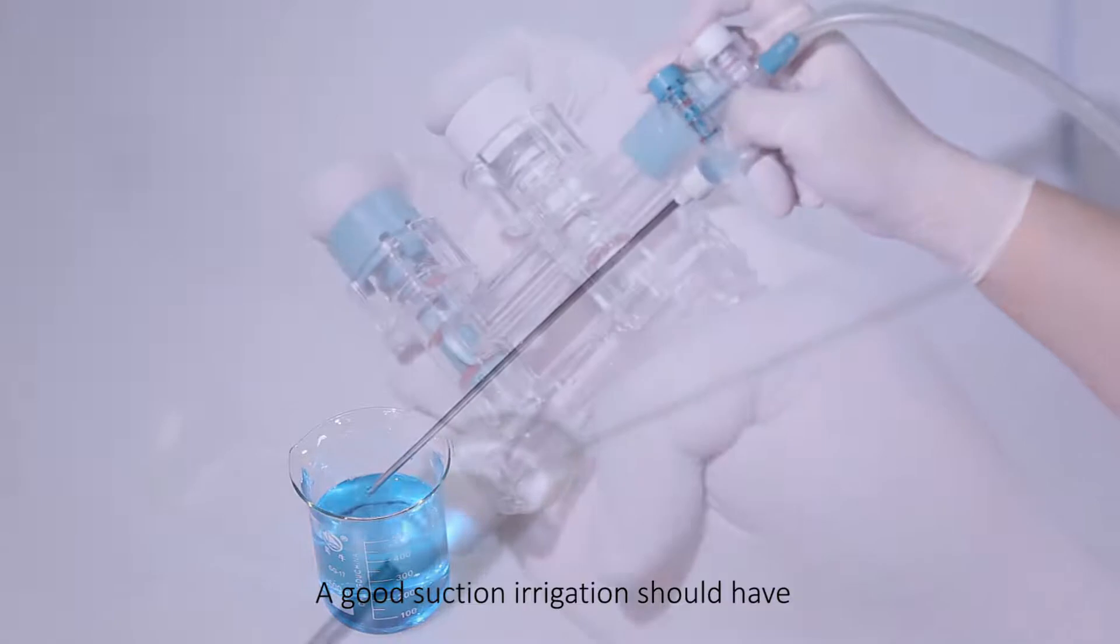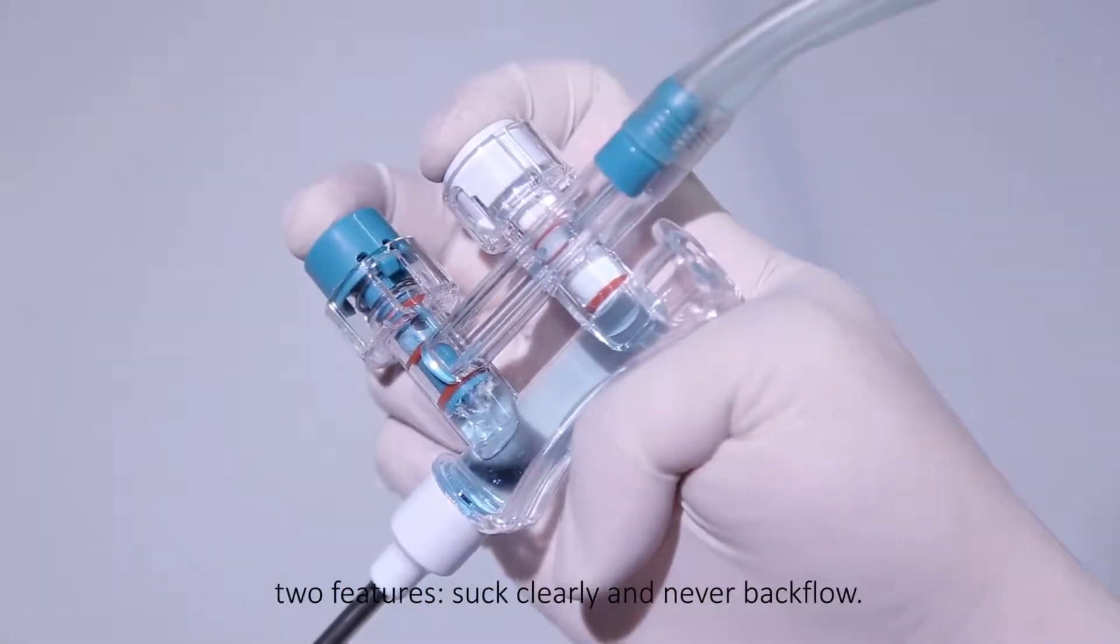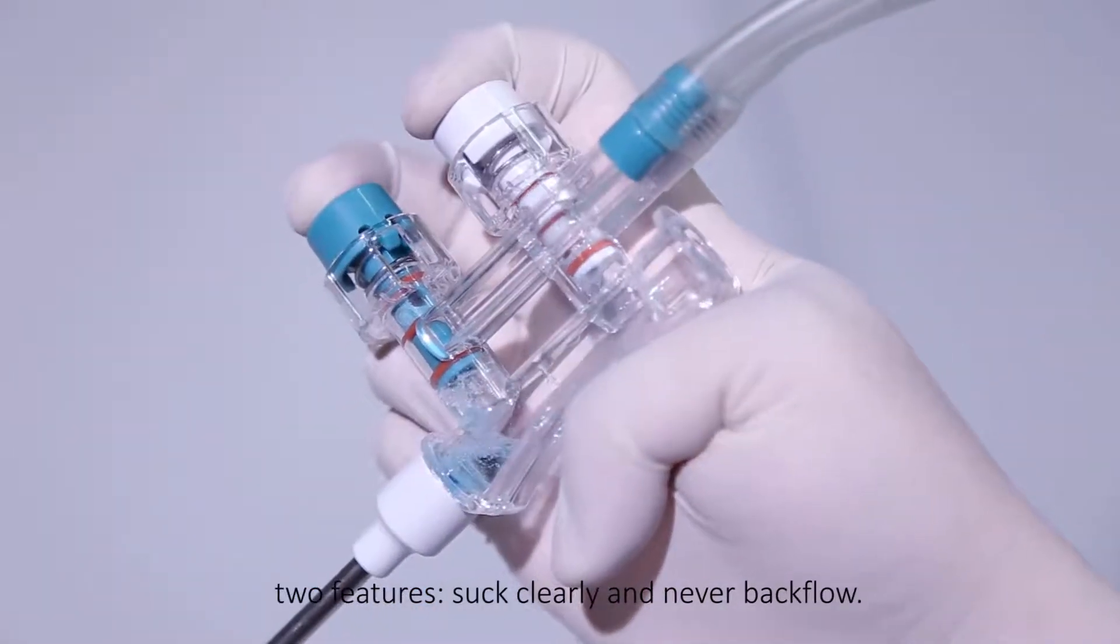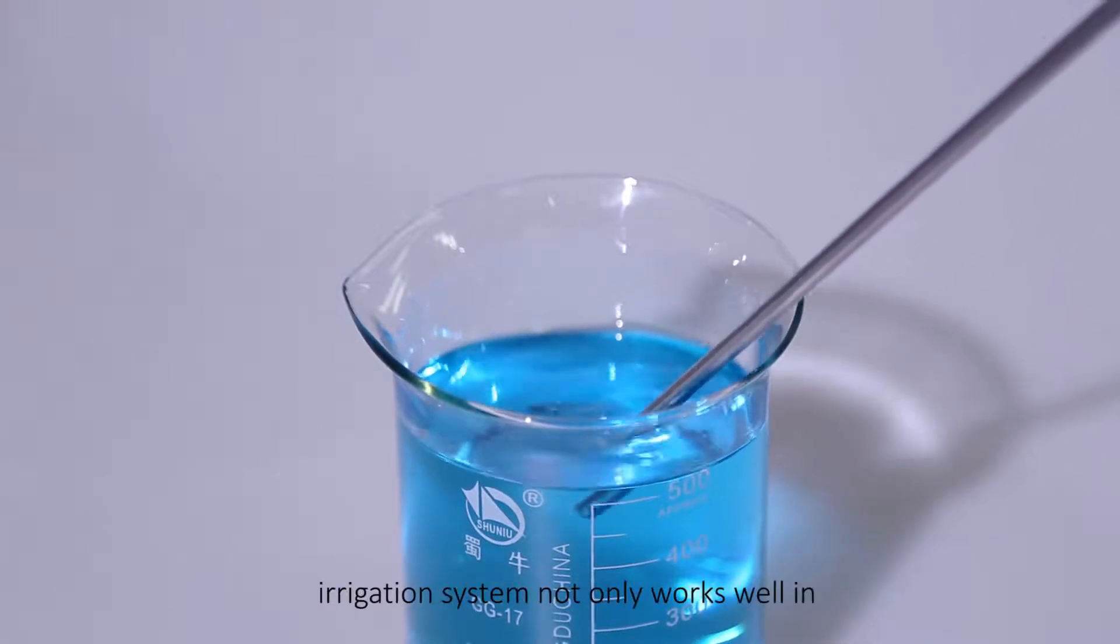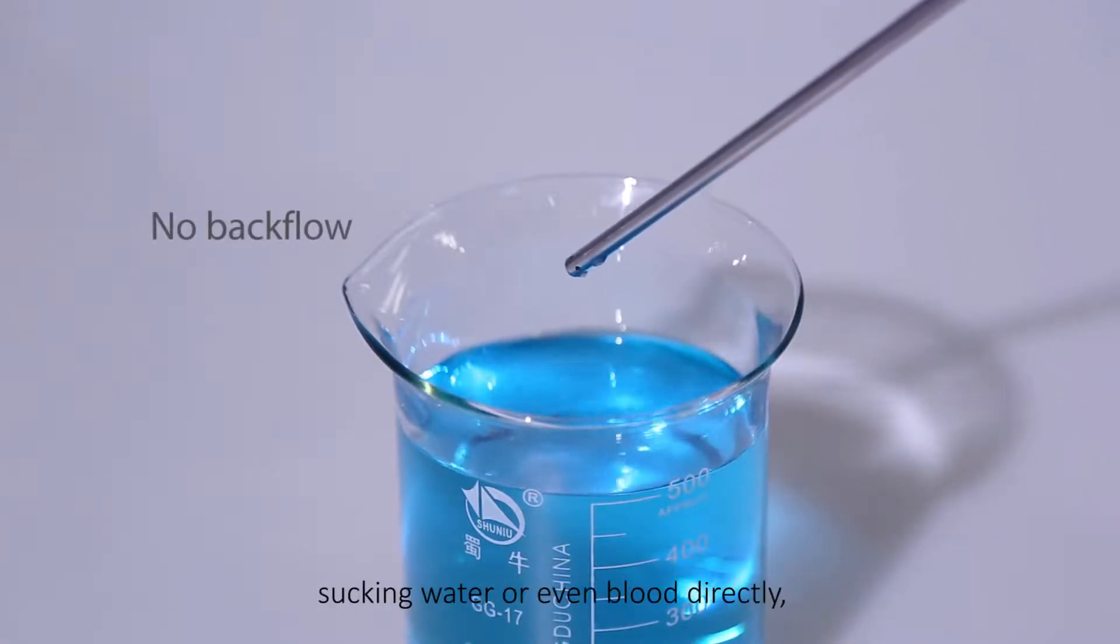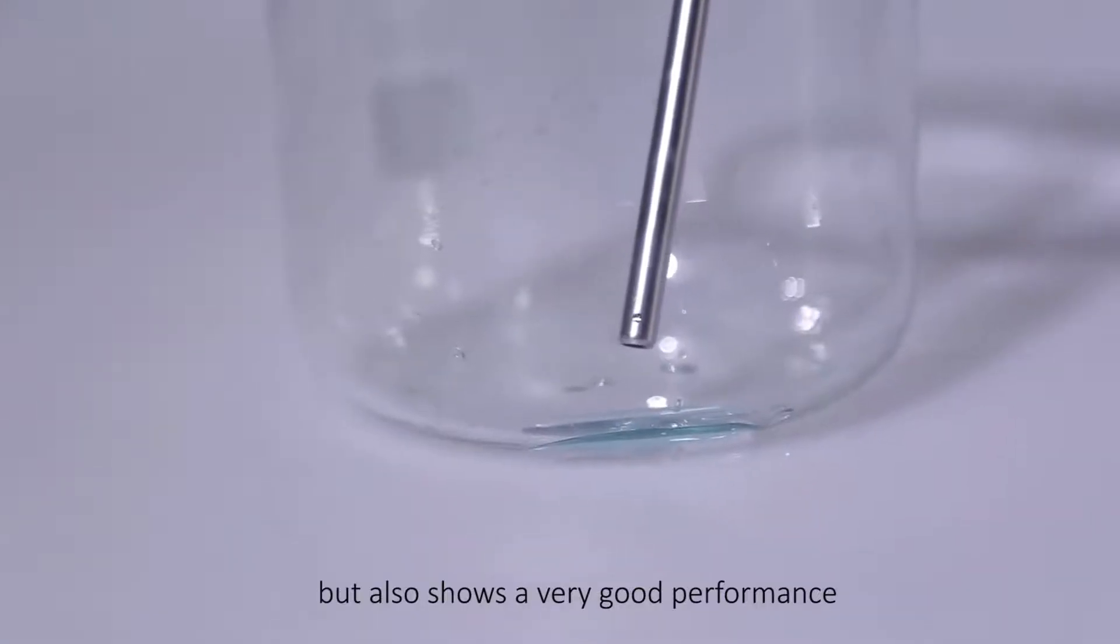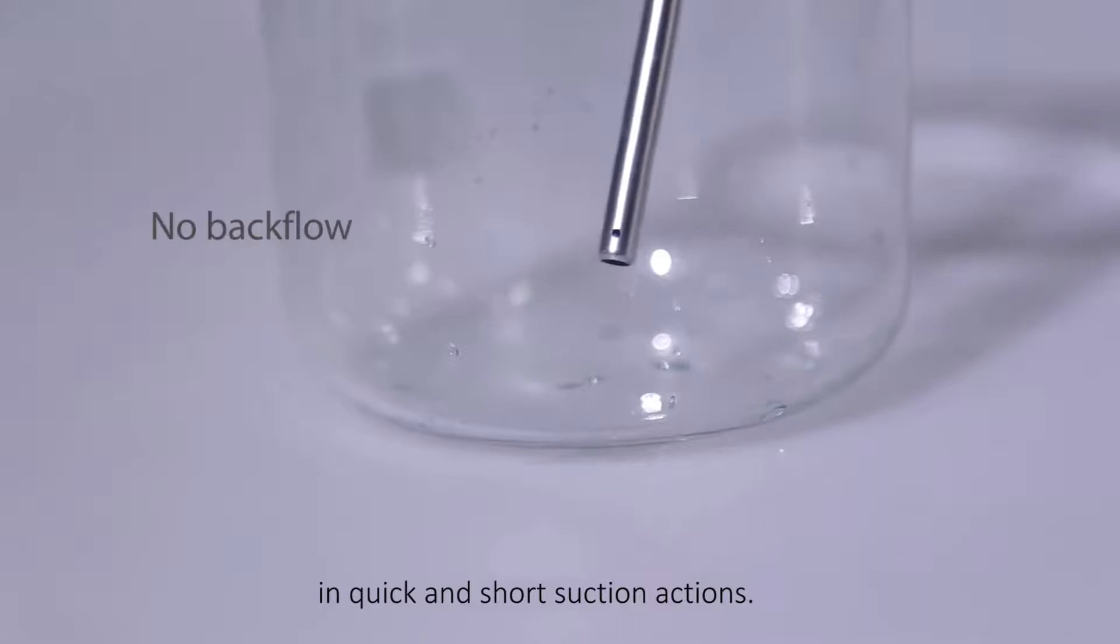A good suction irrigation should have two features: suck clearly and never backflow. The Homeport Disposable Suction Irrigation System not only works well in sucking water or even blood directly, but also shows very good performance in quick and short suction actions.